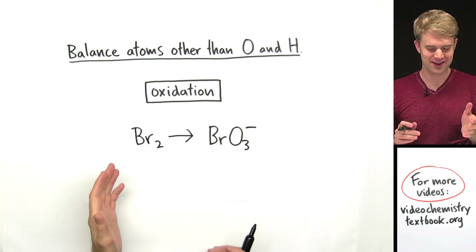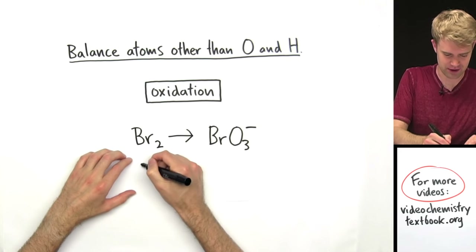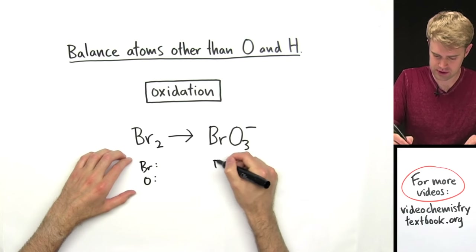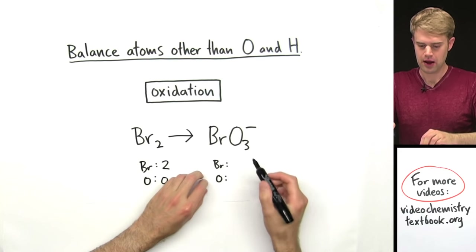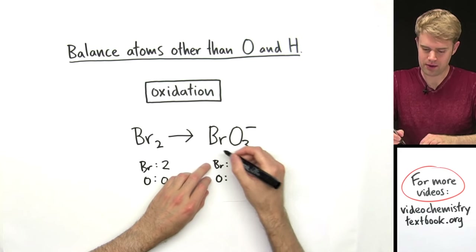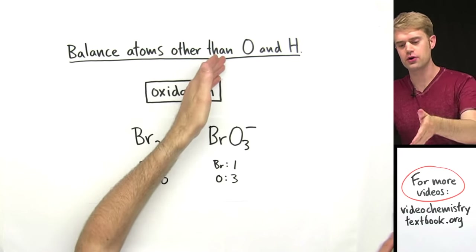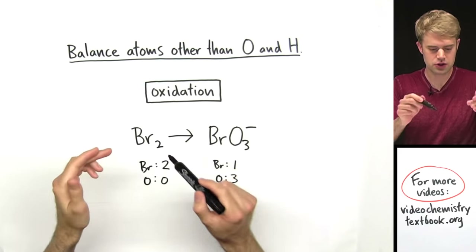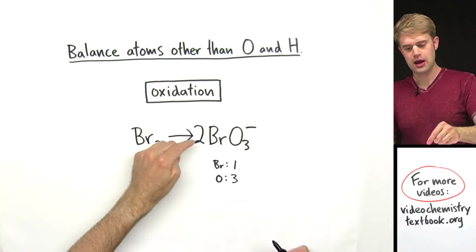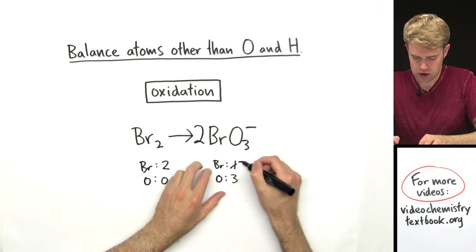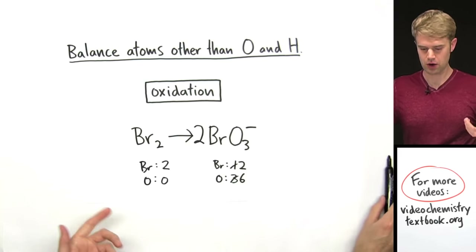Now I've got to balance each one of these for atoms and charge. First we'll make a little chart that shows how many atoms of each type we have on the two sides. I've got bromine and oxygen to deal with. On this side I have two Br's and zero oxygens. Over here I have one Br and O₃, so three oxygens. The first thing I want to do is balance atoms other than oxygen and hydrogen — so that's bromine. I've got two on this side and one on this side, so I stick a two in front of BrO₃⁻. Multiplying by two gives me two bromines but also two times three, which is six oxygens.